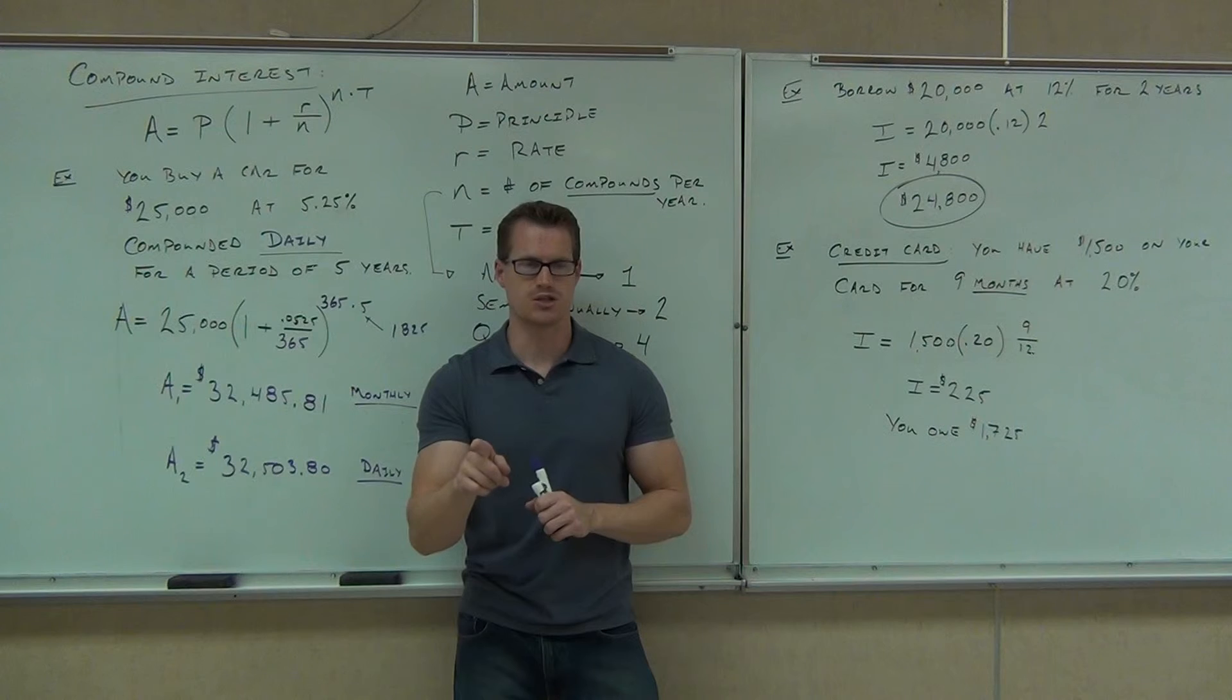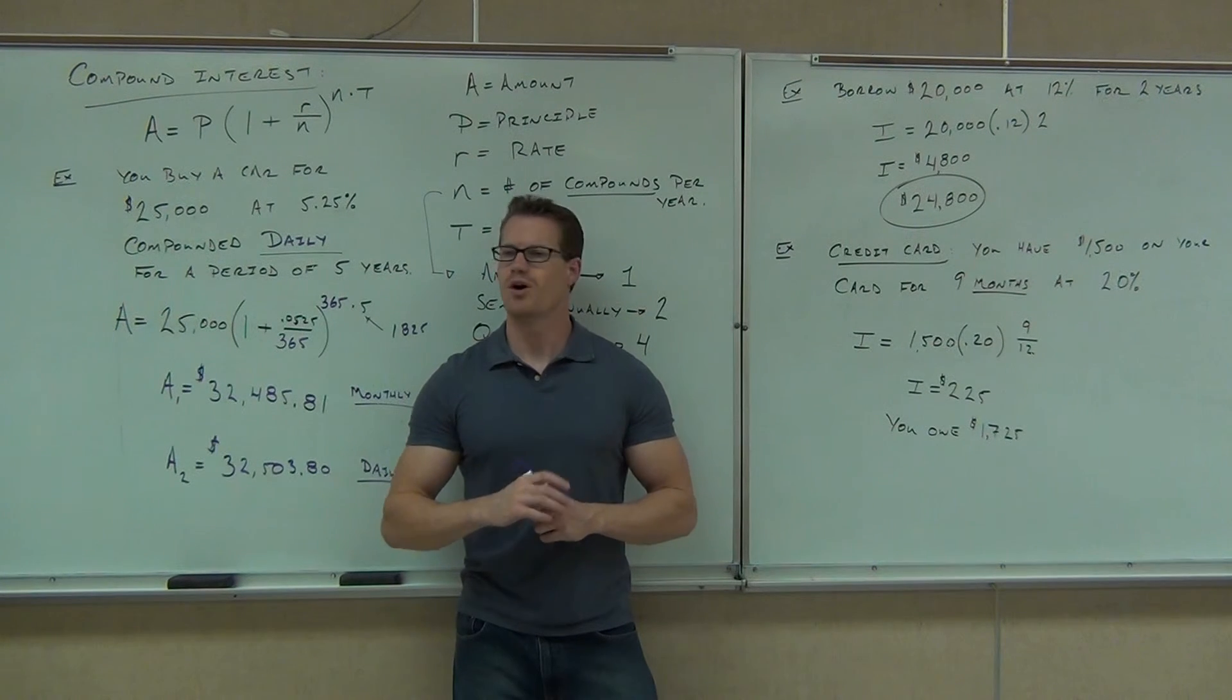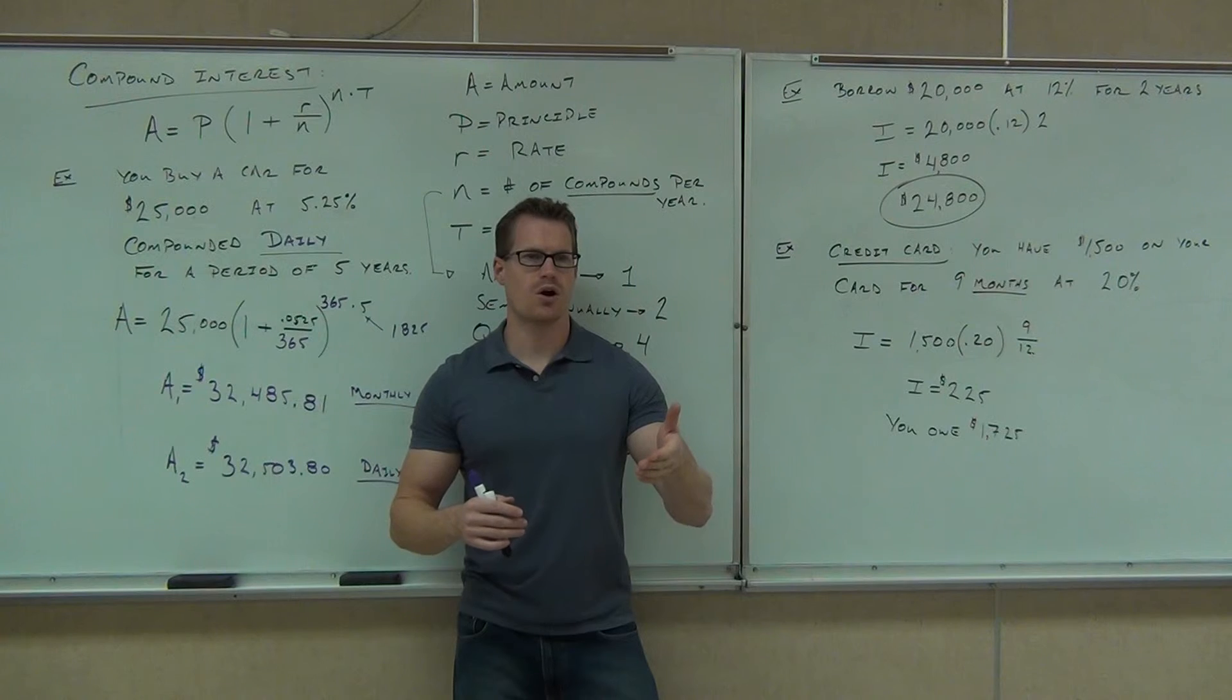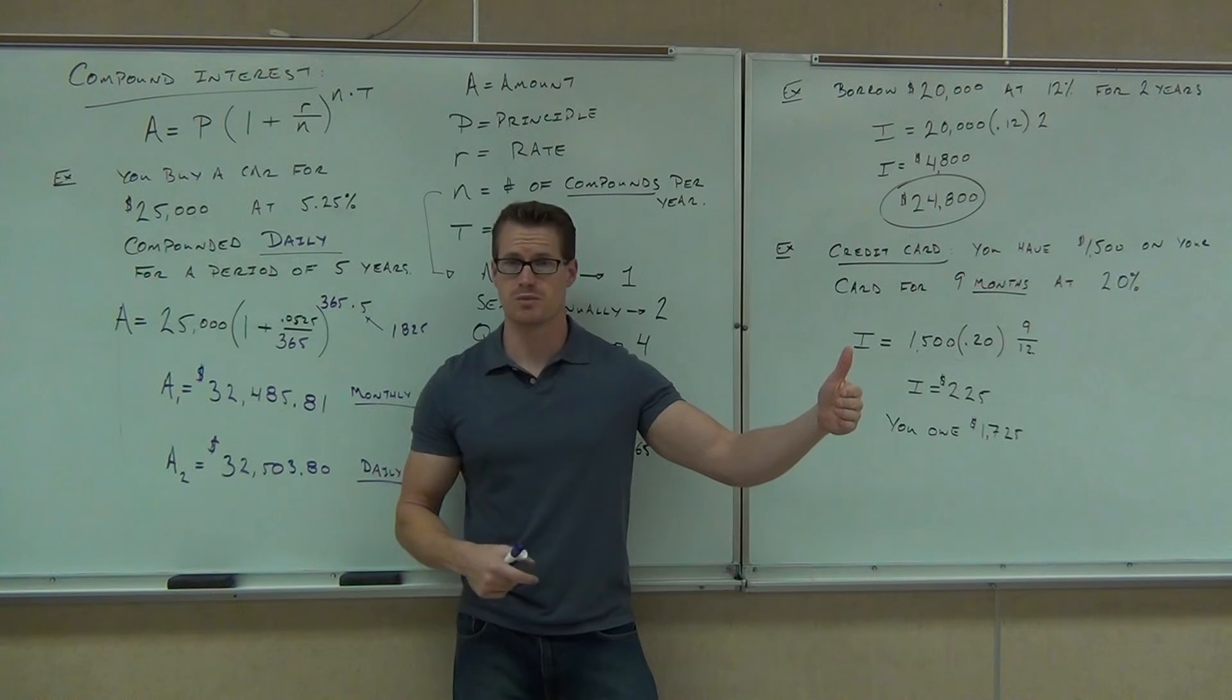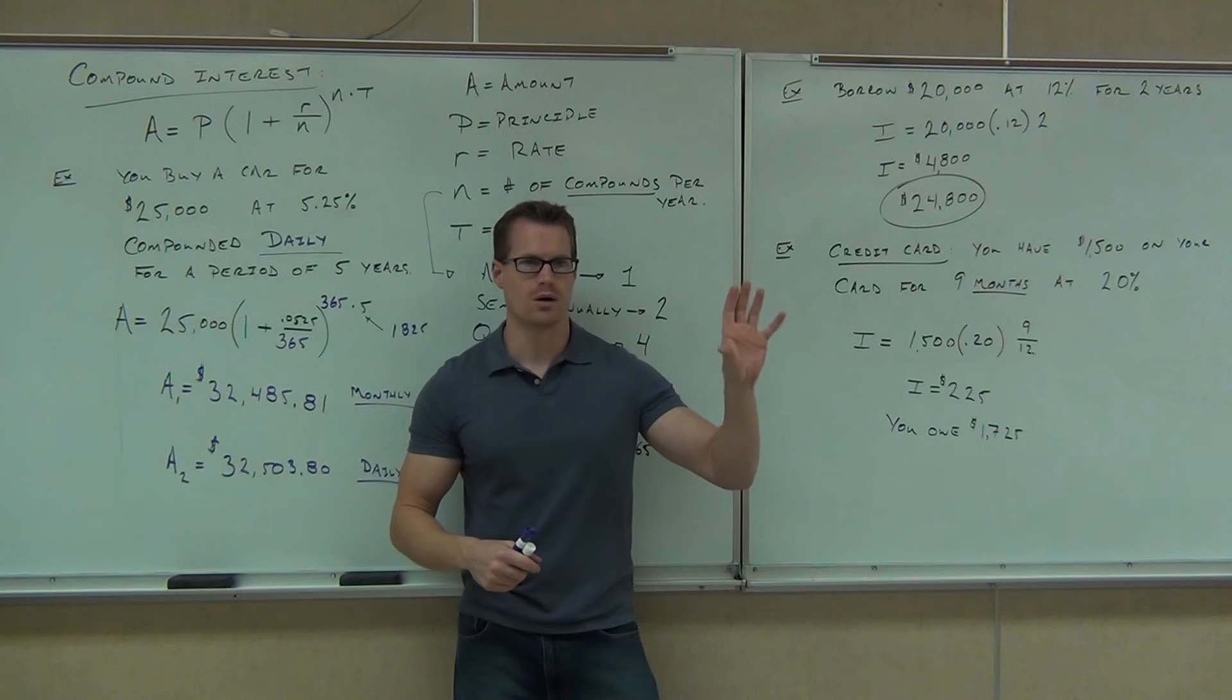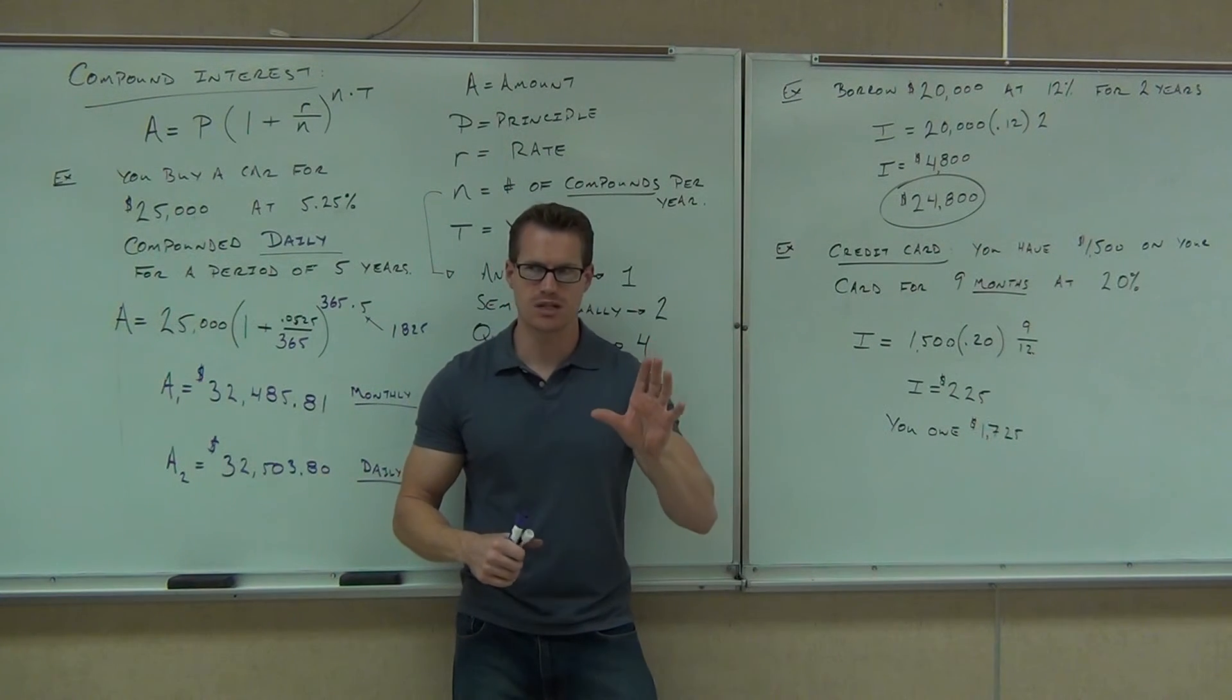You're going to walk in the door, and they're going to go, how much do you want to spend a month? And you're going to go, $200 a month. And they're going to go, we can make that happen. They're just going to finance your $20,000 car over like eight years. You'll be paying for that car for eight years. It'll still be $200 a month, which is going to sound good to you. But over the long haul, you're going to be spending way, way more than what that car is worth. Do you get the idea? So that's how they would get you there.